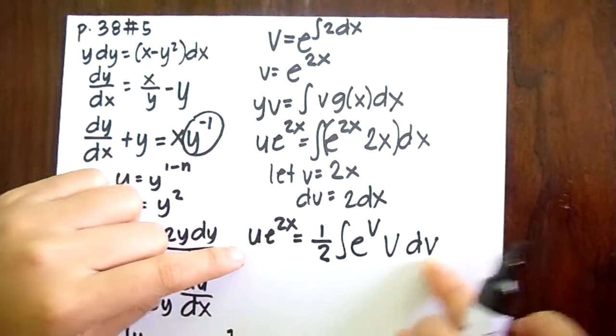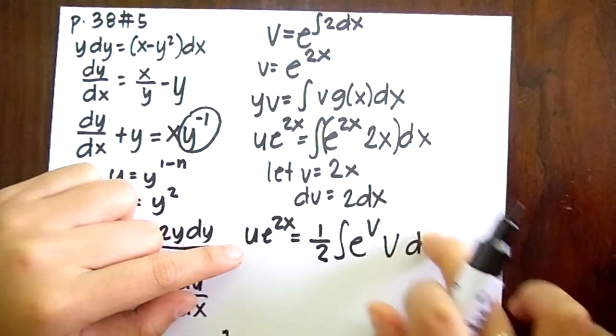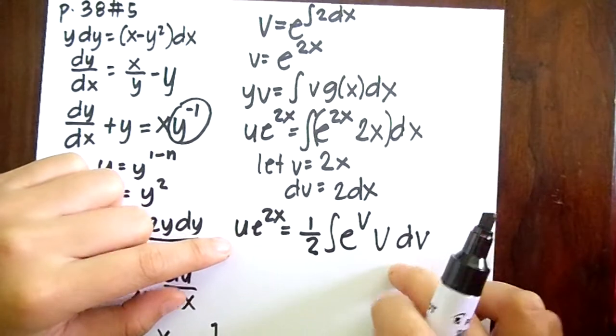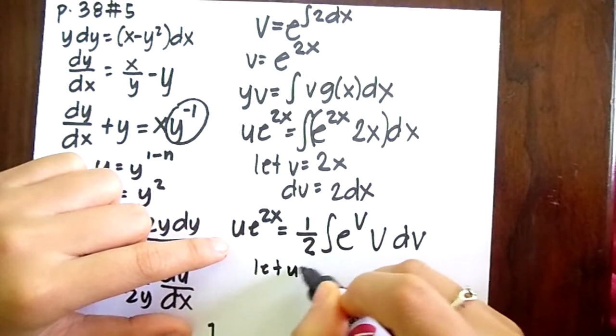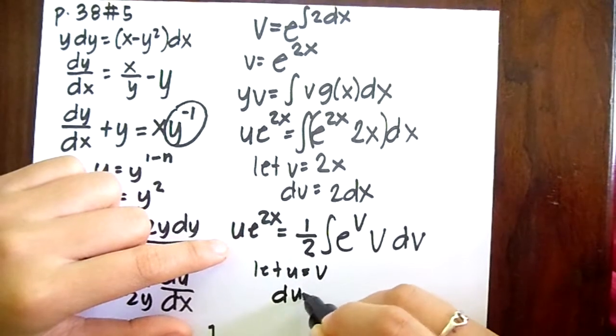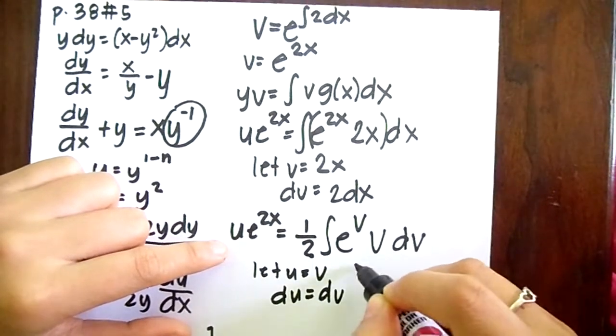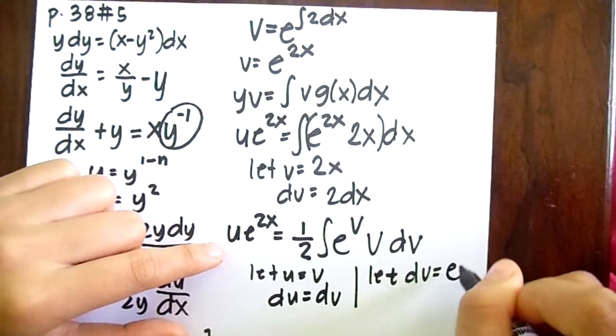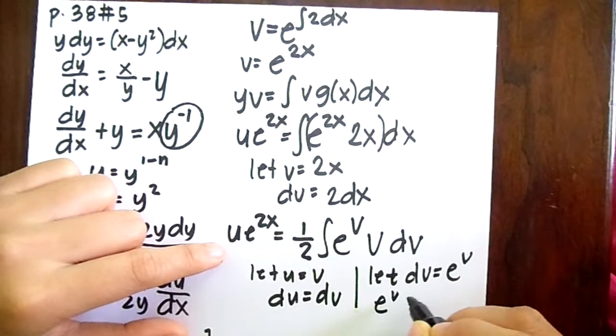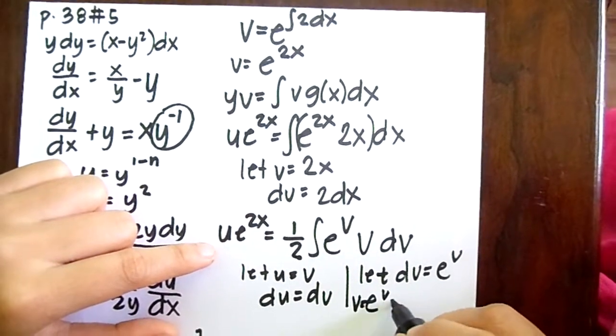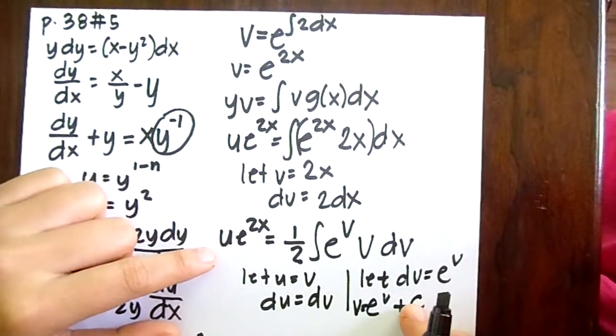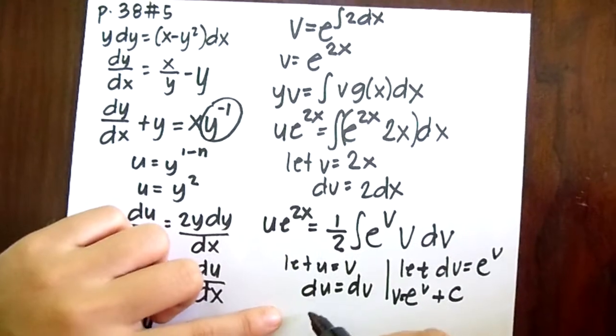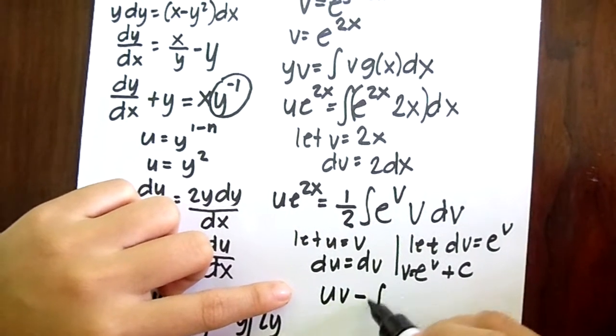So the next thing we do here is to integrate again this part, and we can integrate it using integration by parts. So we let u equals v, which is du equals dv, and we let dv equals e to the v, which is v equals e to the v plus c. Now, using the formula for integration by parts, which is uv minus integral of v du.